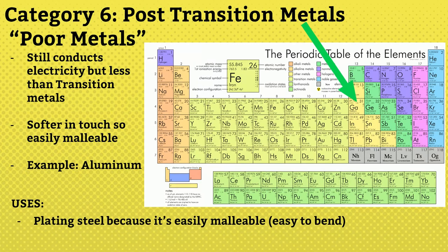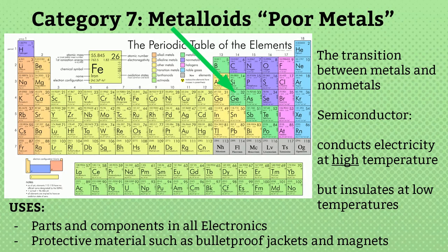Category 6: these are called post-transition metals, also called poor metals. They still conduct electricity but less than transition metals. They are softer, so easily malleable. For example, aluminum, element number 13, is used to make vessels. These poor metals are used for plating steel because they are easily malleable, meaning easy to bend.